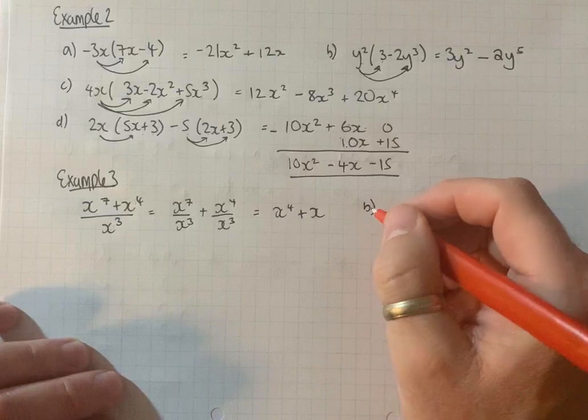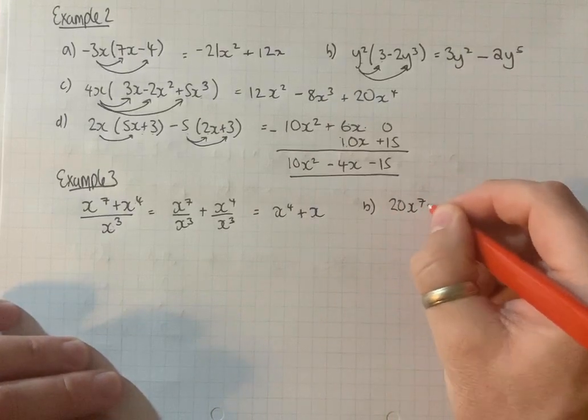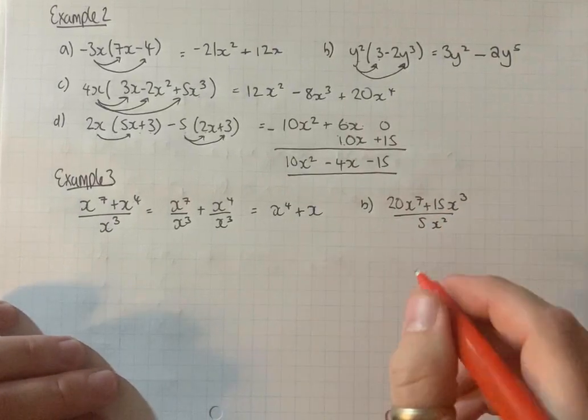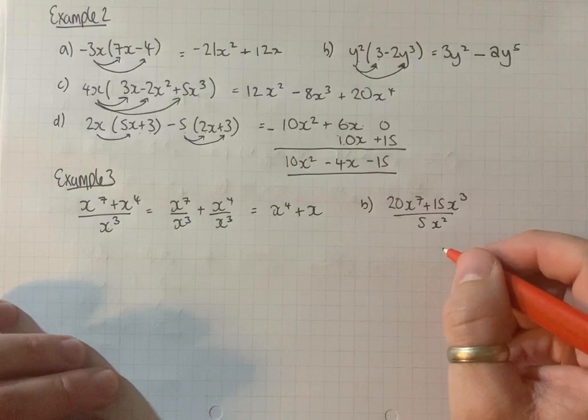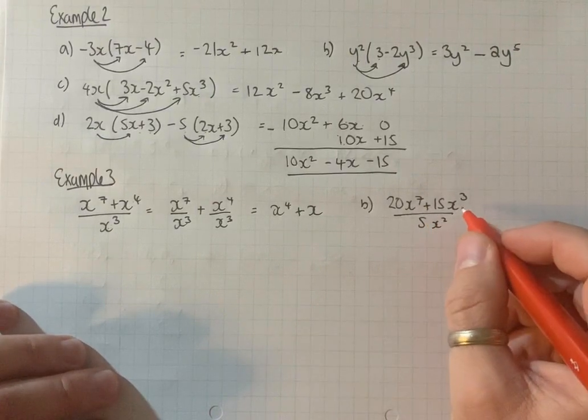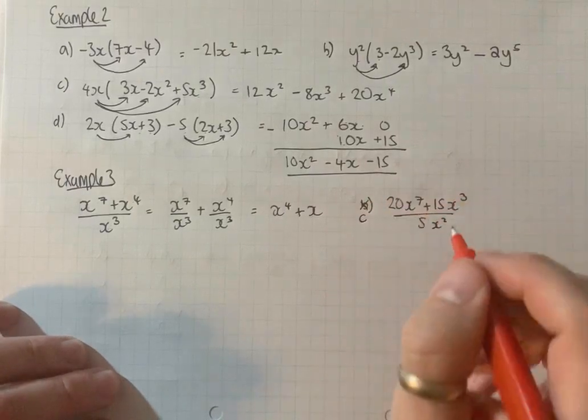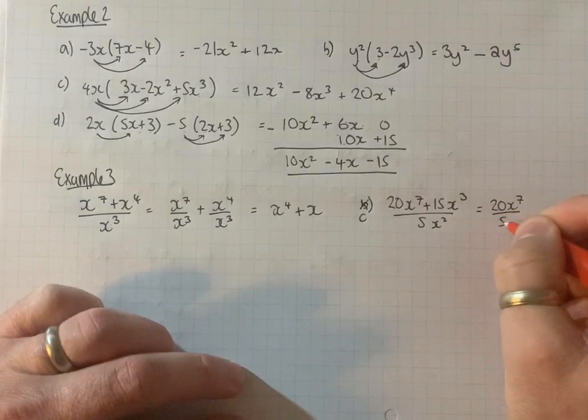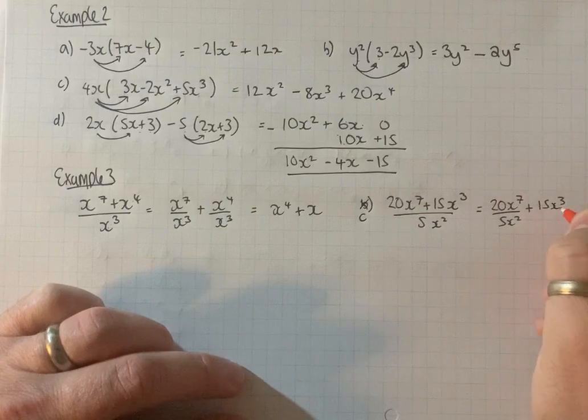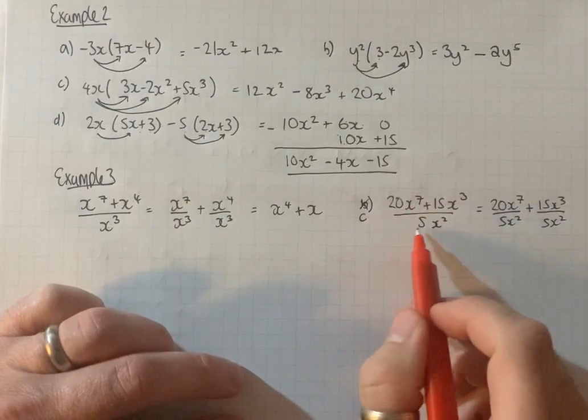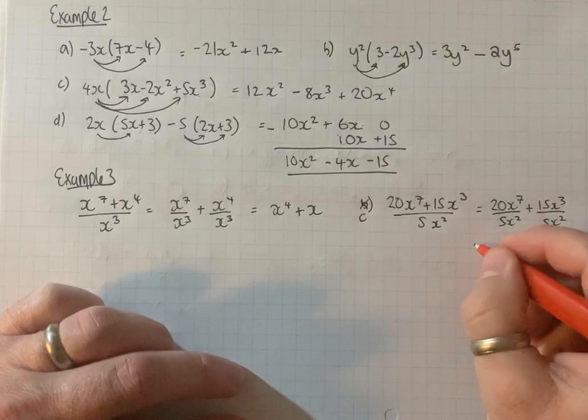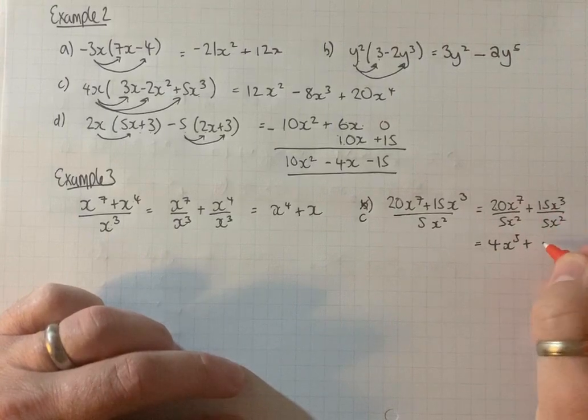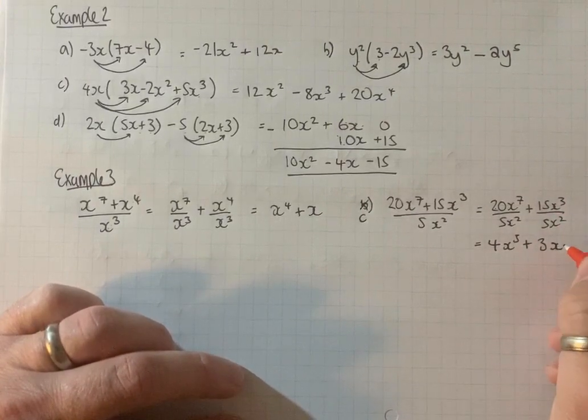20x to the 7 plus 15x cubed all divided by 5x squared. This one is actually C. So we'll do C first and we'll go back and do B later. So splitting that up, we've got 20x to the 7 divided by 5x squared plus 15x cubed divided by 5x squared. Again just splitting the numerator and dividing each part by the denominator. So 20 over 5 is 4, subtract the powers, x to the 5. 15 over 5 is 3, subtract the powers, x.